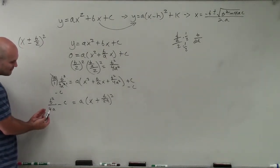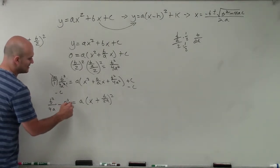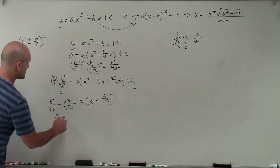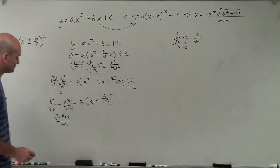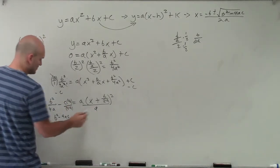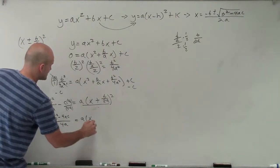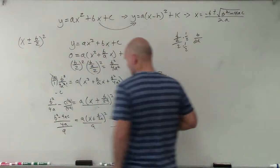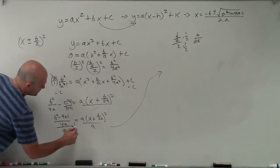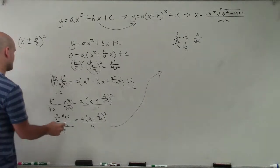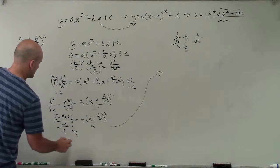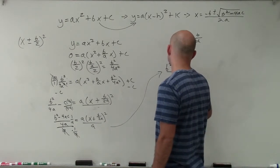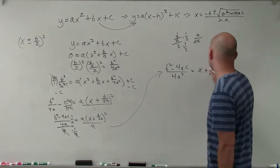Now I have b squared over 4a minus c on the right. To get a common denominator, I multiply c by 4a over 4a, so I can combine them into b squared minus 4ac all over 4a. Then I need to get rid of my a on the left side, so I divide both sides by a — which is the same as multiplying by its reciprocal — giving me b squared minus 4ac all over 4a squared, equals x plus b over 2a, all squared.